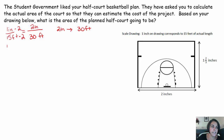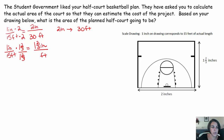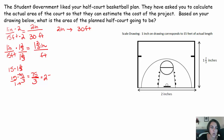Now I take my scale of one inch equals 15 feet, and my width is one and two thirds inches. I want to know how many feet that will be. I multiply 15 times one and two thirds, which is 15 times five thirds. Multiplying straight across gives me 75 over three, and 75 divided by three is 25 feet.